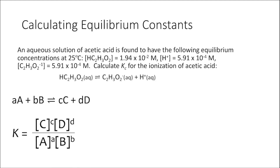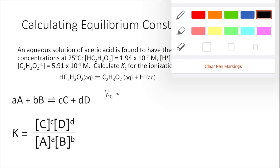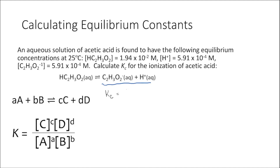Let's calculate the equilibrium constant for the ionization of acetic acid, given the concentrations of all of our reactants and products at equilibrium. The first thing we want to do is write our equilibrium constant expression. The value for Kc is equal to the concentration of our products raised to their respective coefficients — so the concentration of the acetate ion multiplied by the hydrogen ion concentration, divided by the concentration of our reactant raised to its respective coefficient. All coefficients in this problem are 1.